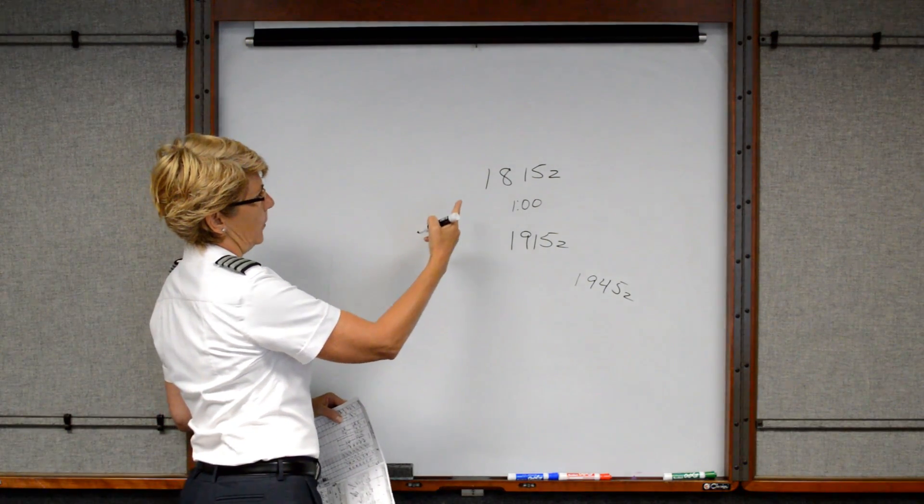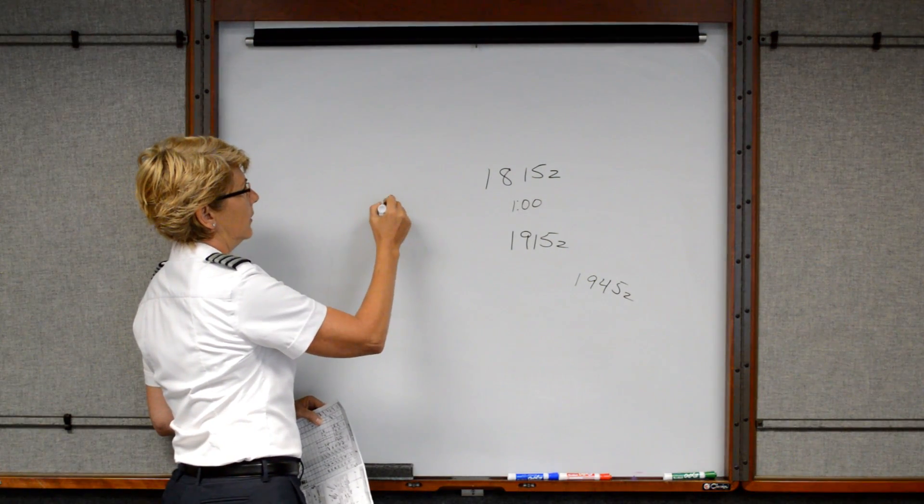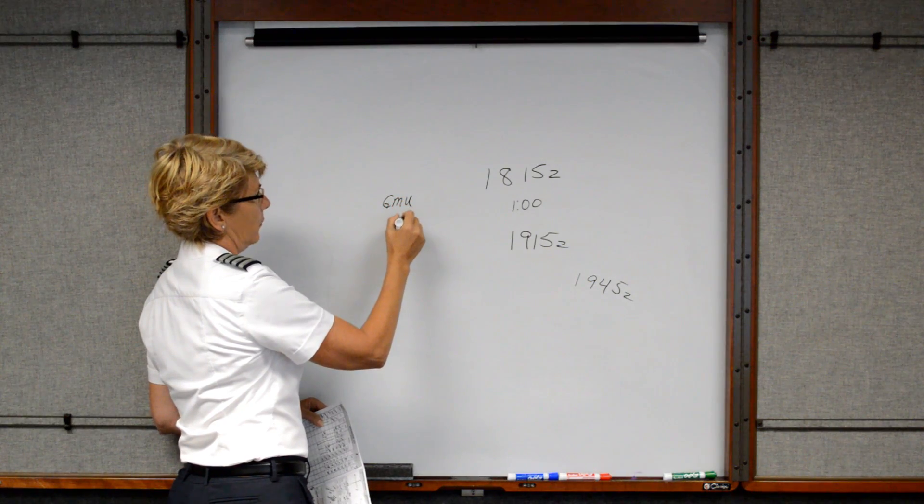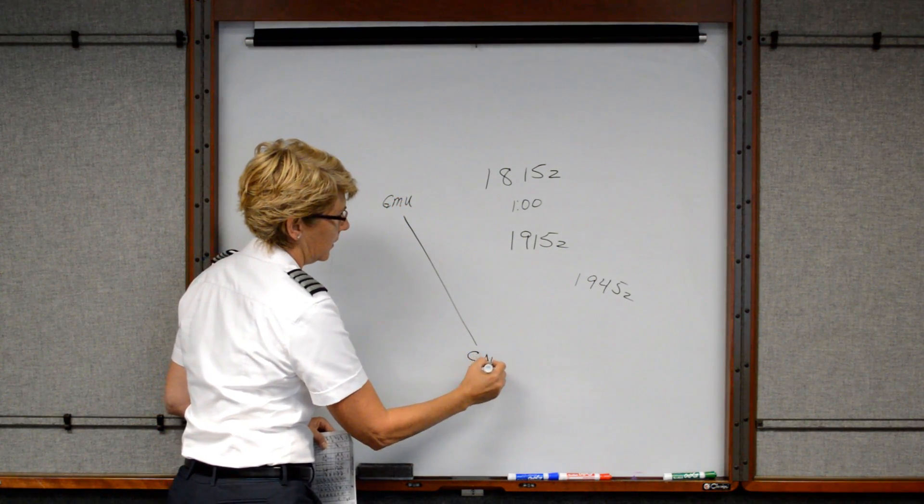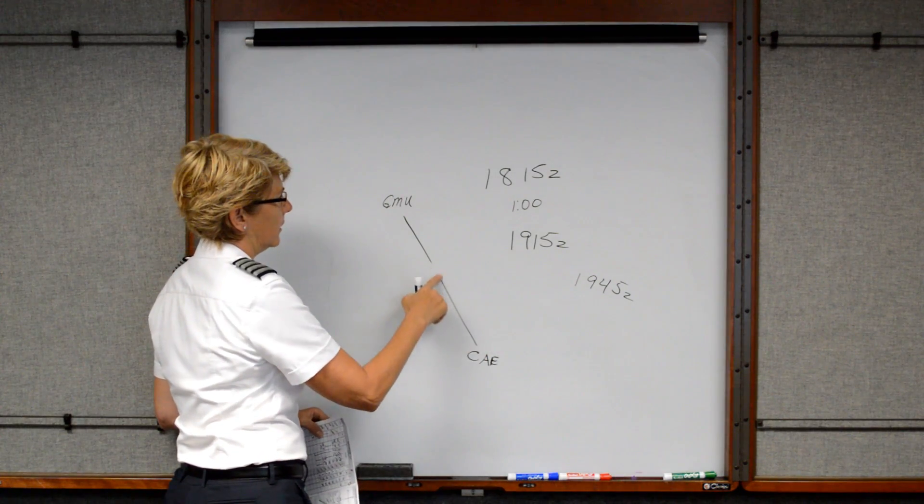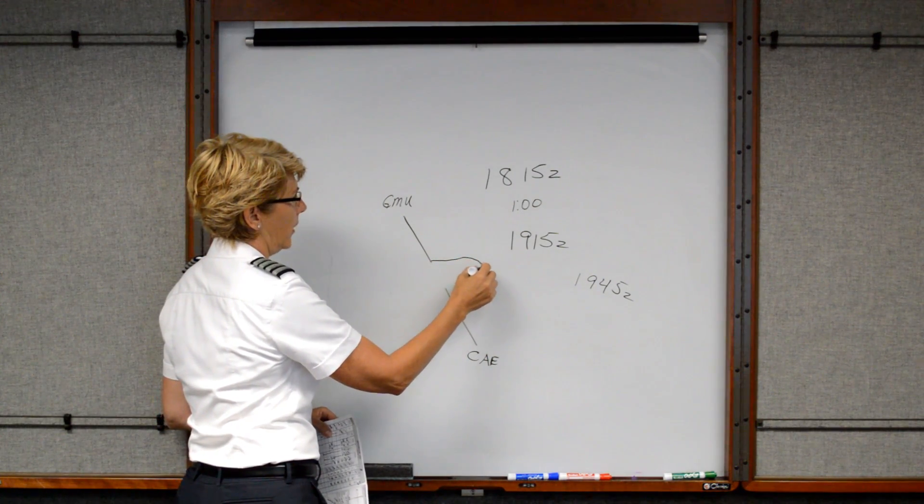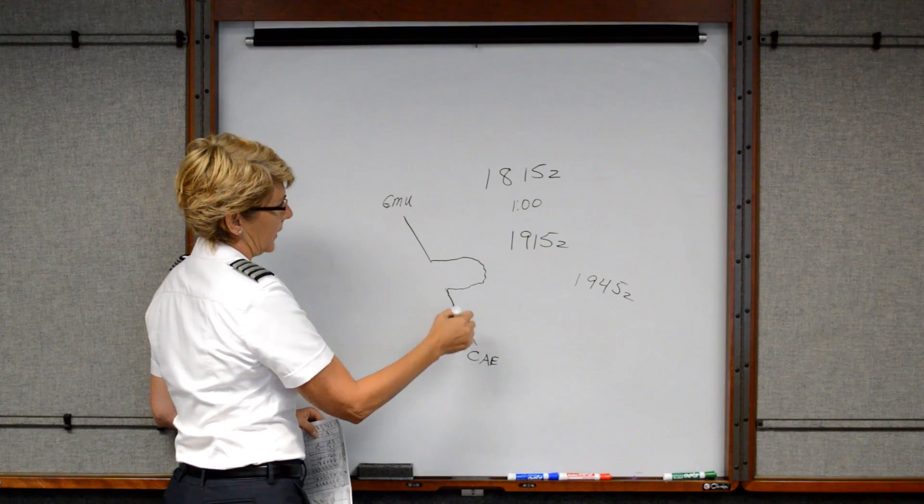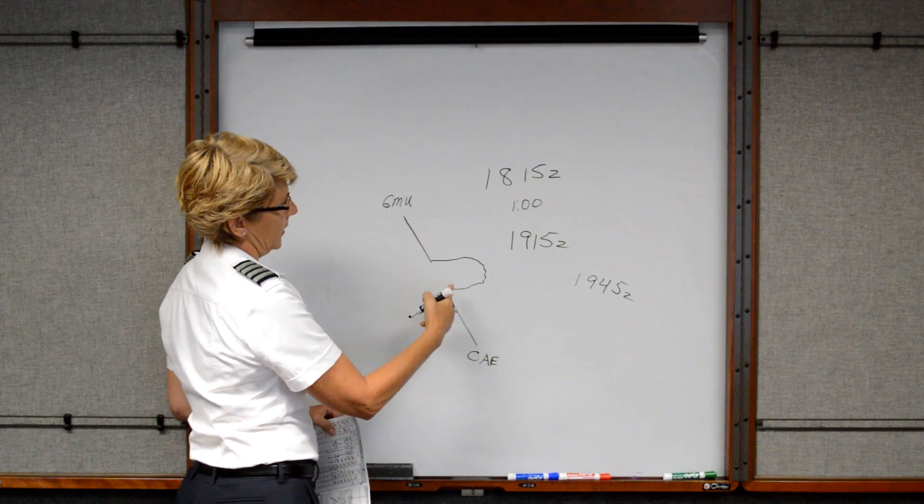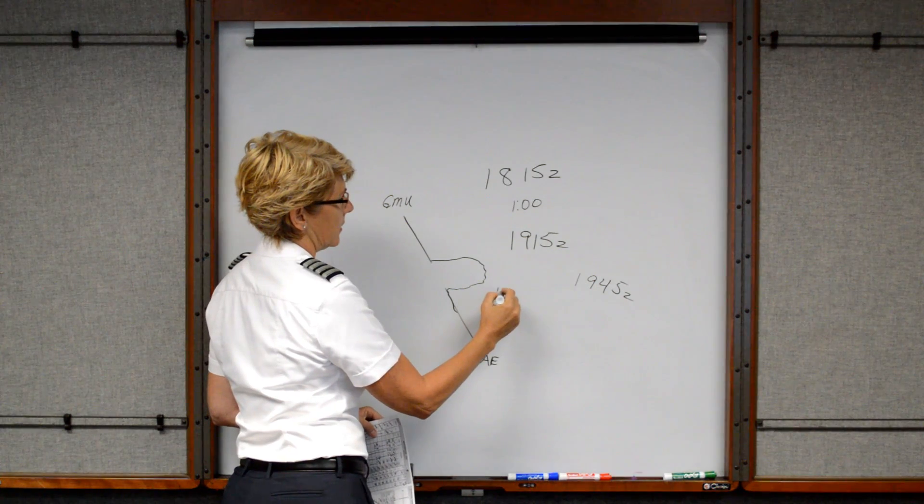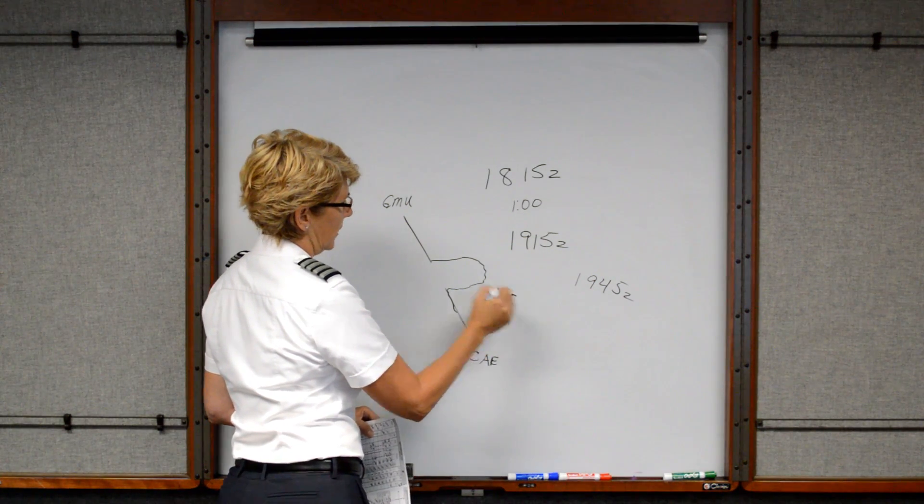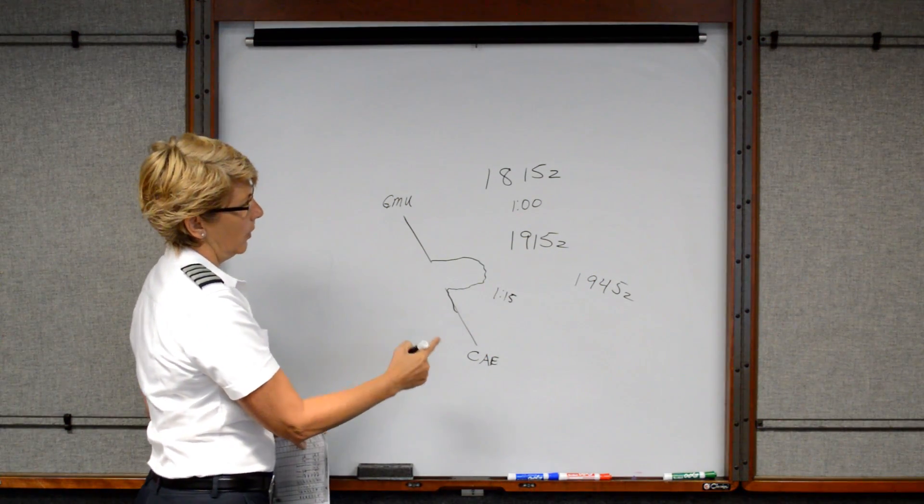Let's say for example we left Greenville and we're flying along. We wanted to go direct to Columbia, but for whatever reason we had to divert around some weather and then came back on course. And you see that it's going to take you an hour and 15 minutes to make it to your destination.